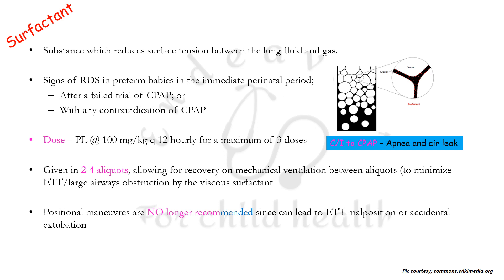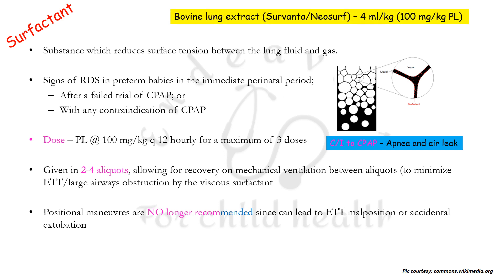Positional maneuvers used earlier are no longer recommended, since they can lead to endotracheal malposition or accidental extubation. What we commonly use is the bovine lung surfactant, referred to as Cervanta or Neosurf, at a dose of 4 ml/kg, which equates to around 100 mg/kg of phospholipids. This is to be divided into two to four aliquots during administration.